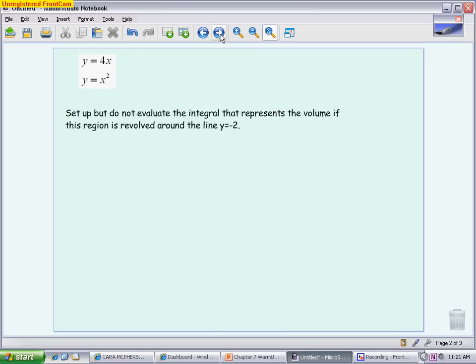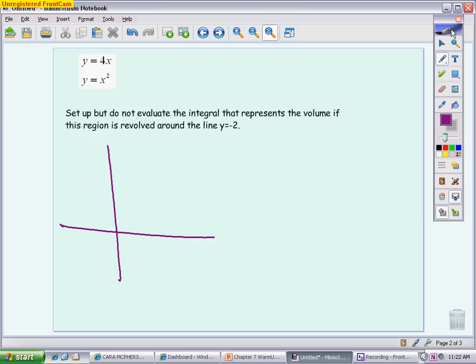We're going to continue with that same region. But this time, the directions are asking you to set up, but don't evaluate. Again, we're not going to go to our calculator. The integral that's going to represent the volume if this region is revolved around a line y equals negative 2. So, let's draw another picture so we can see it. And I'm going to try to use a couple colors so it's a little easier for everyone to see.